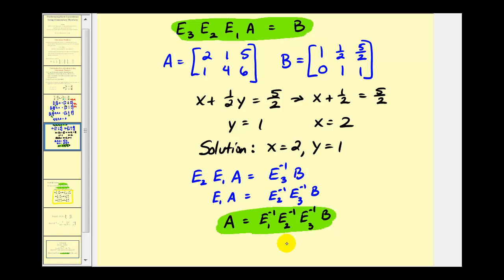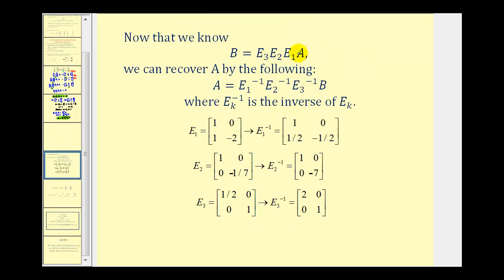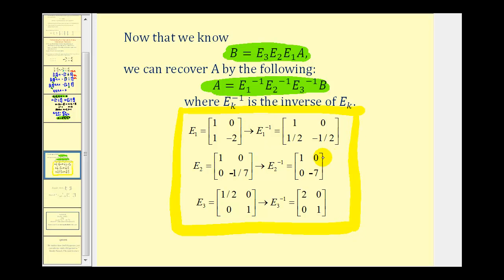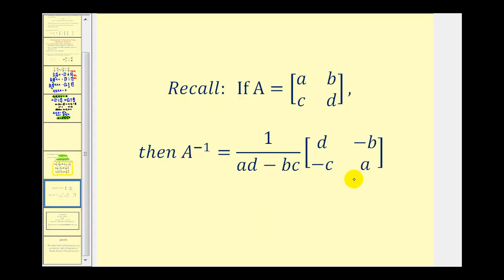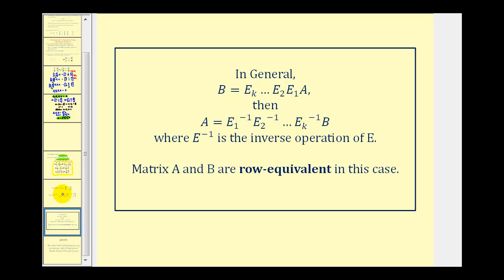Let's formally summarize. Here are the two equations we found: one used to solve the system, and one found when solving for A. The inverses of our original elementary matrices are provided here, and you can verify them yourself — remember, to find an inverse of a two-by-two matrix, we can use the formula given on this slide. Finally, since we found matrix B by multiplying matrix A by elementary matrices, A and B are considered row-equivalent matrices.